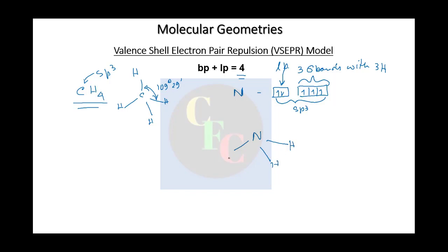You can draw it the same way. Now we have a lone pair here. The lone pair is only loosely held by the nitrogen, so it is much closer to nitrogen. As such, it exerts repulsive pressure on the nitrogen-hydrogen bonds, causing them to contract toward each other. As a result, this angle decreases to 107 degrees.